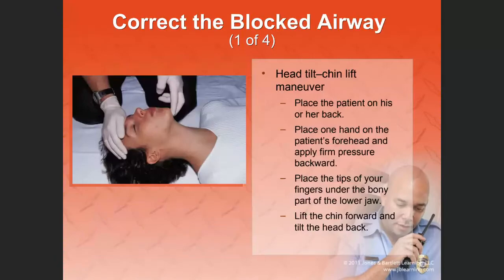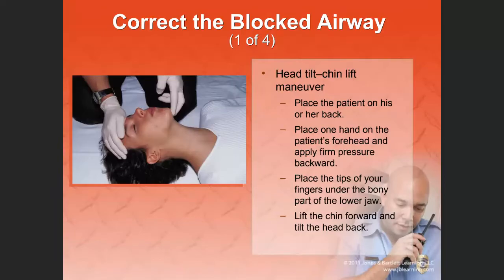To correct a blocked airway, you have the head tilt–chin lift maneuver and the jaw thrust maneuver. The head tilt–chin lift is indicated when the patient is unresponsive and there is no indication of a spinal injury. If a spinal injury is suspected, then the jaw thrust technique would be used.